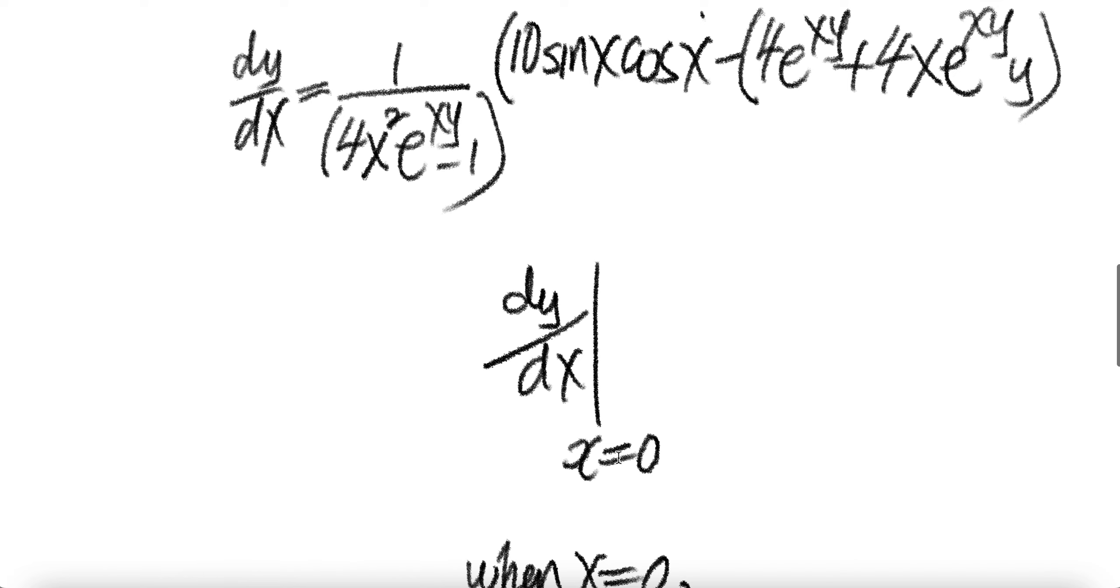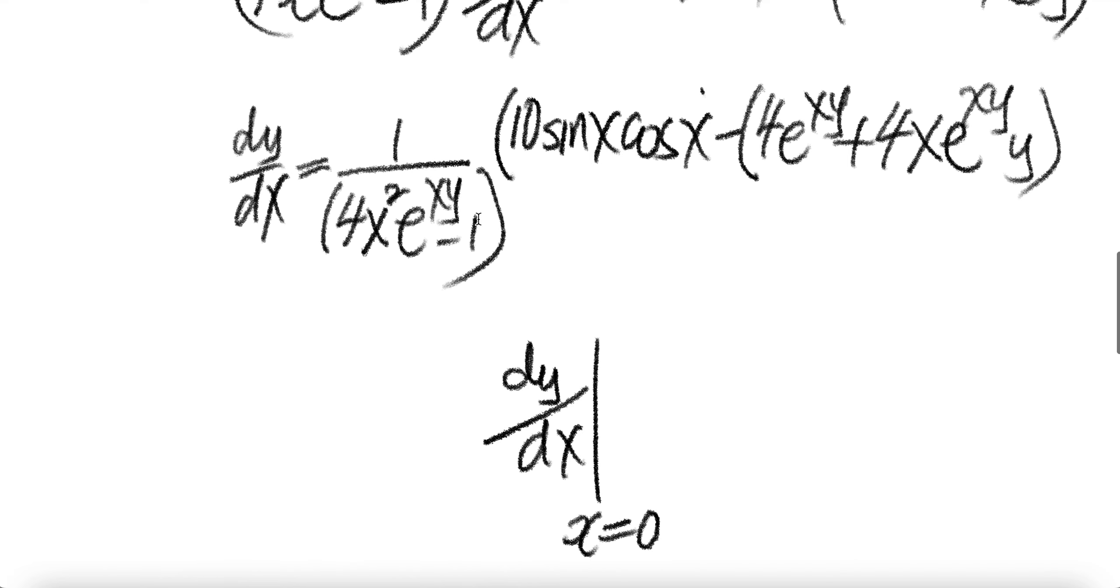Now let us evaluate dy/dx at x equals zero. Notice when we put x equals zero, not good enough. We still have y. When x equals zero, we need that y value. There's a relationship between x and y.